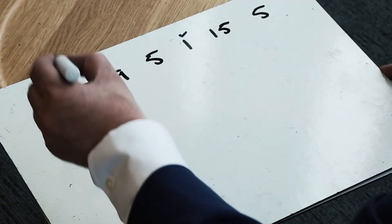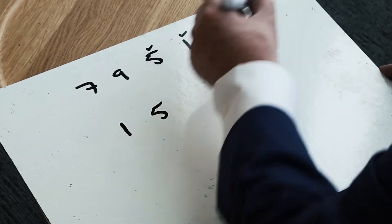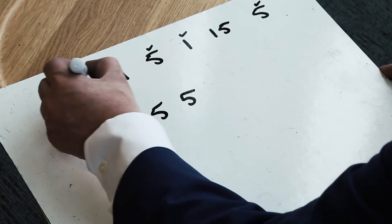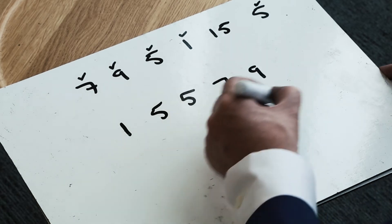Looking at my data set, I've got 1, then 5 and 5, so I've got the two 5s down there, then 7, 9, and 15.